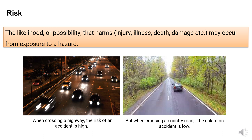We will understand risk with one example: a car as a hazard while crossing a road. When crossing a highway, the risk of an accident is high. But when crossing a country road, the risk of an accident is low. Risk is determined by the exposure to a hazard.